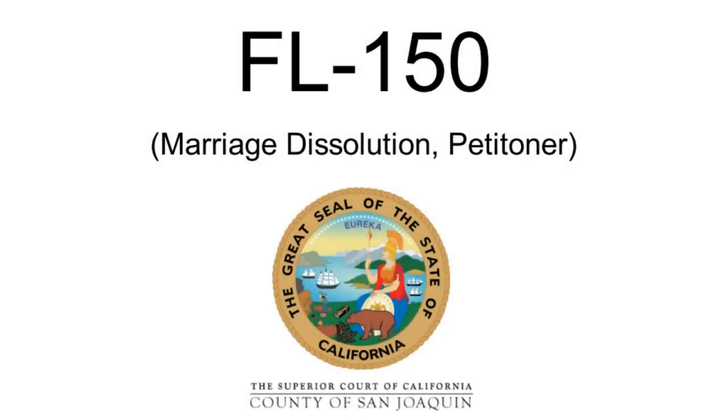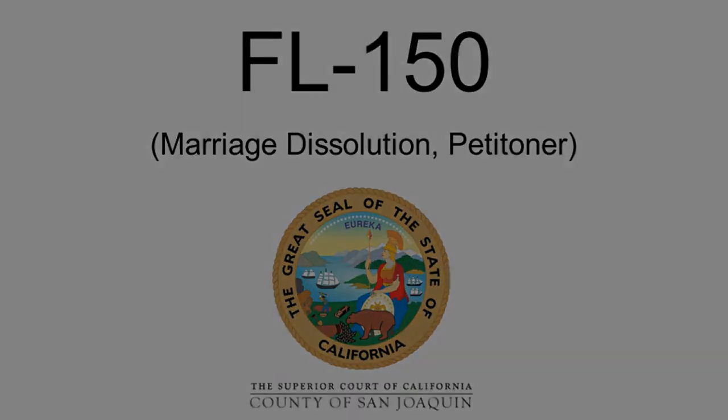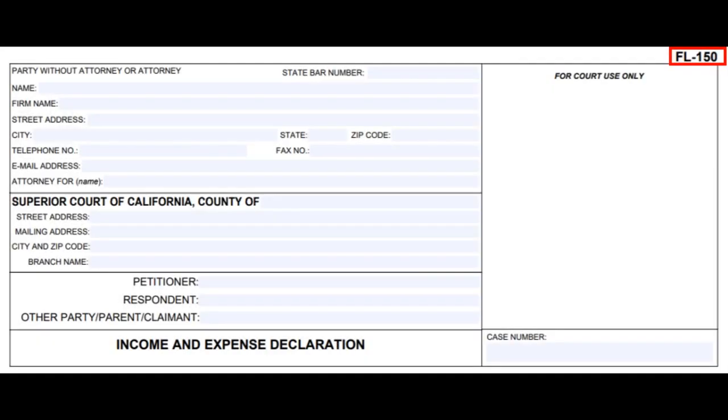On the third page, in section 12, you are only putting individuals who find you. The purpose of the FL-150 is to show only your income and expense declaration.